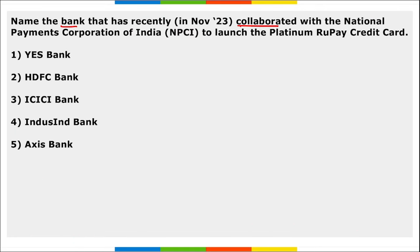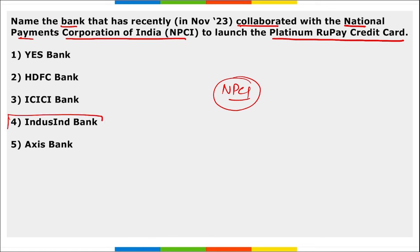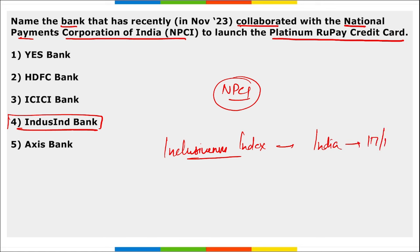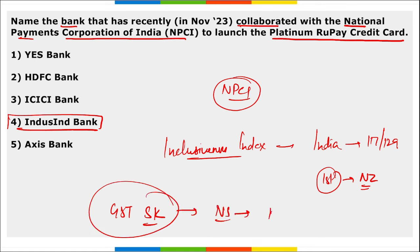Name the bank that recently collaborated with the National Payment Corporation of India (NPCI) to launch the platinum rupee credit card. That bank is IndusInd Bank. This will enable customers to make payments through the RuPay network using point-of-sale devices and on e-commerce websites. Regarding the Inclusiveness Index, India stands at 117 out of 129 nations, and New Zealand secured the top position. Additionally, 12 GST Seva Kendras were inaugurated by Nirmala Sitharaman in Gujarat.